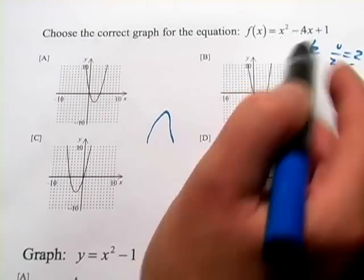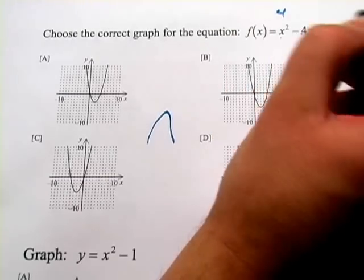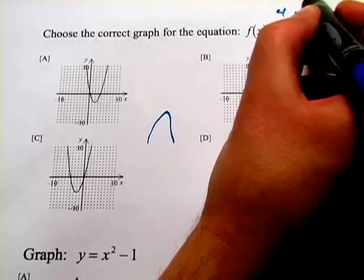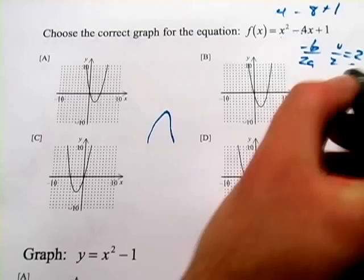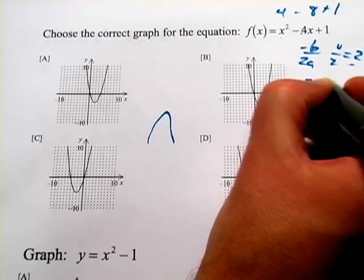To get the Y-coordinate, we plug that back in. 2 squared would be 4, minus 4 times 2 would be 8, plus 1. 4 minus 8 is negative 4, plus 1. So that's 2, negative 3.